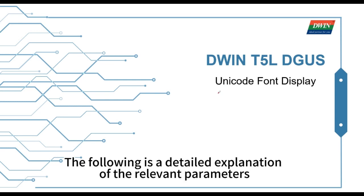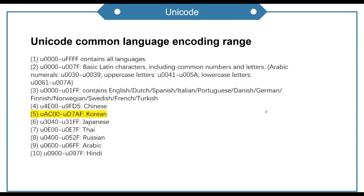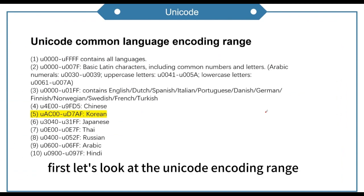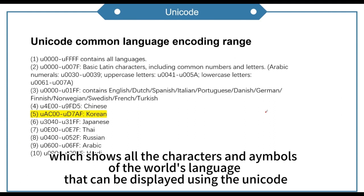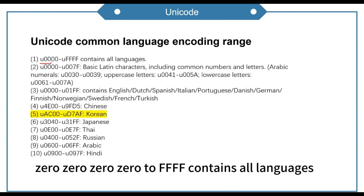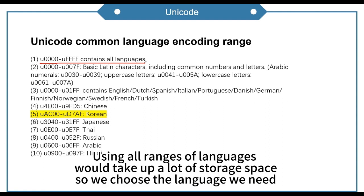The following is a detailed explanation of the relevant parameters. First let's look at the Unicode encoding range, which shows all the characters and scripts of the world's languages that can be displayed using Unicode. The range 0000 to FFFF contains all languages. Using all ranges would take up a lot of storage space, so we choose only the language we need.